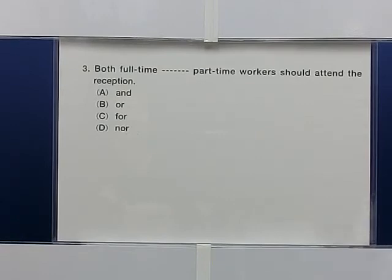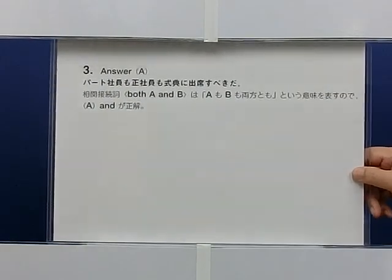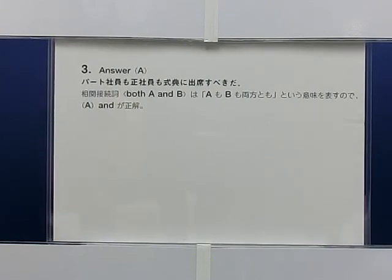練習問題 No.3. Both full-time [blank] part-time workers should attend the reception. A. And  B. Or  C. For  D. Nor. The answer is A. パート社員も正社員も式典に出席すべきだ。相関接続詞 Both A and B は「AもBも両方とも」という意味を表すので、Andが正解。